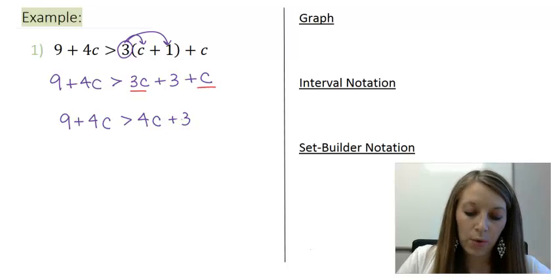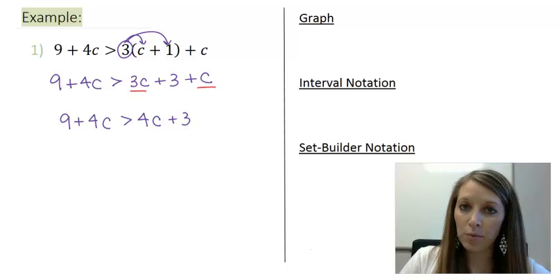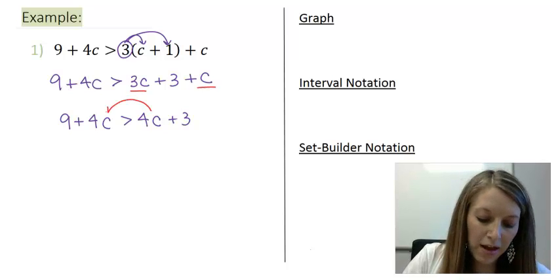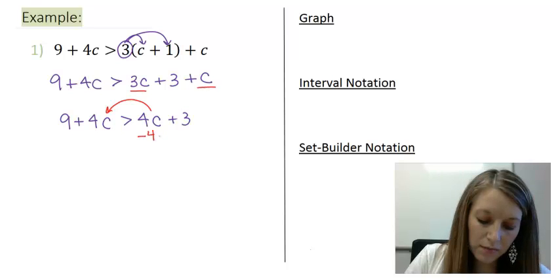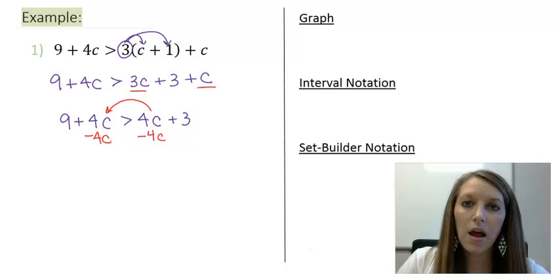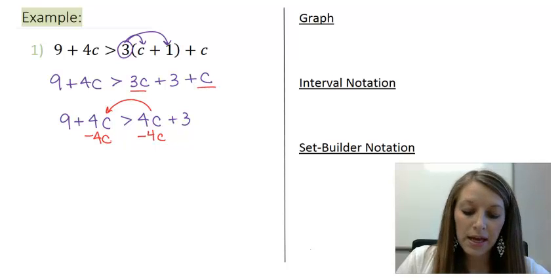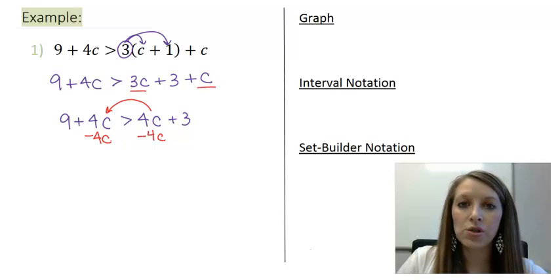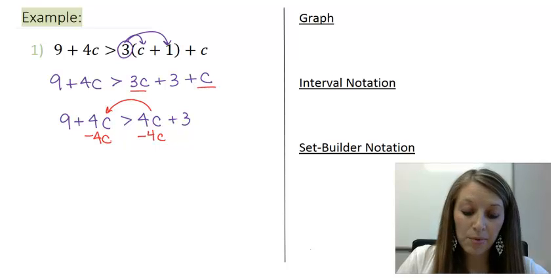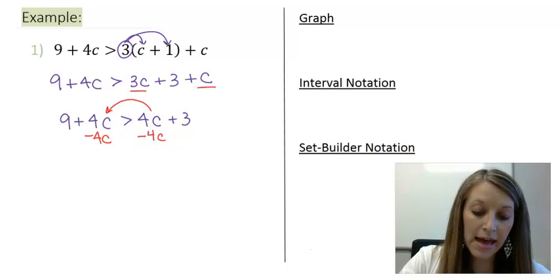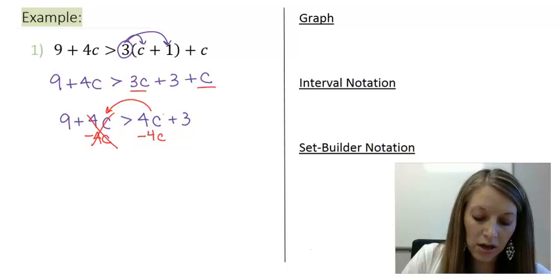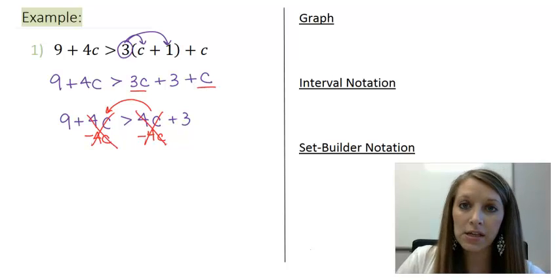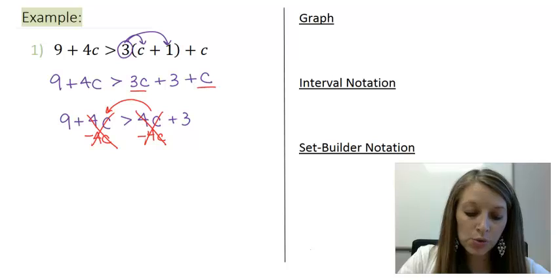That gives me 9 plus 4c is greater than 4c plus 3. Now, I want to rearrange this where I put all of my variables together. So let me move my 4c to the left. And notice what happens. It doesn't matter if I would have moved this to the left or to the right because these 4c actually end up canceling each other out on both sides of the equation.